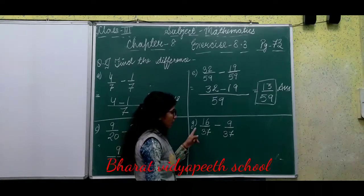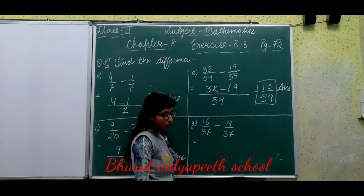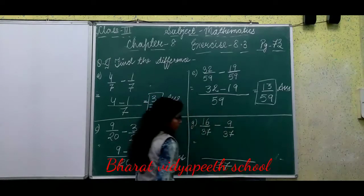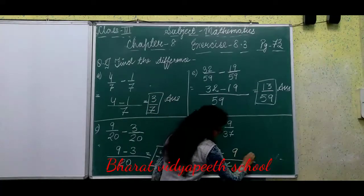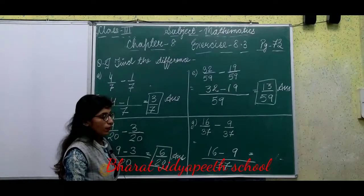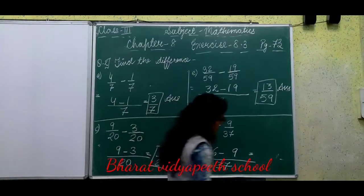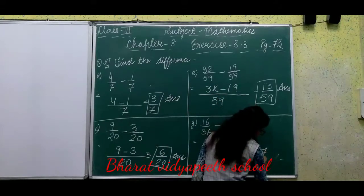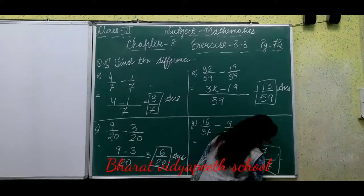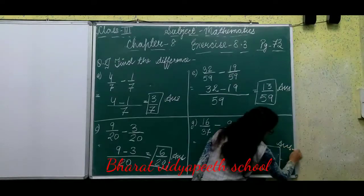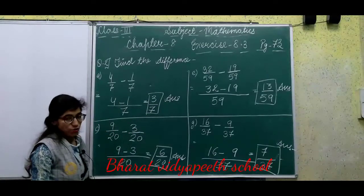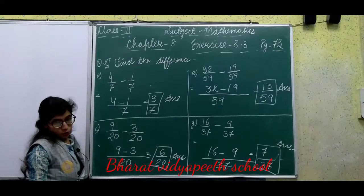Part G: 16 upon 37 minus 9 upon 37. Denominator 37 stays as it is. 16 minus 9 equals 7. So the answer is 7 upon 37. Now the remaining parts — B, D, F, H — do yourself in your notebook as well.